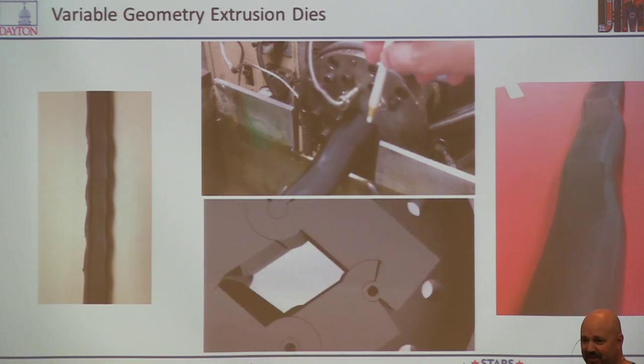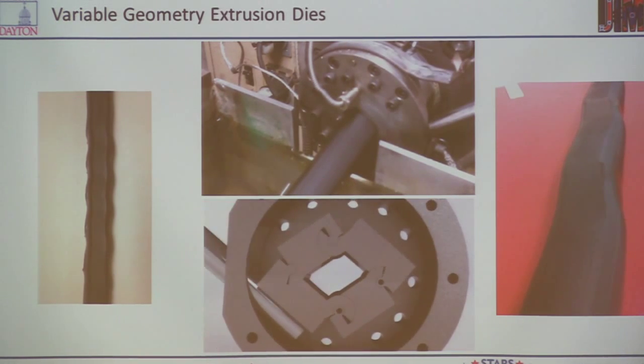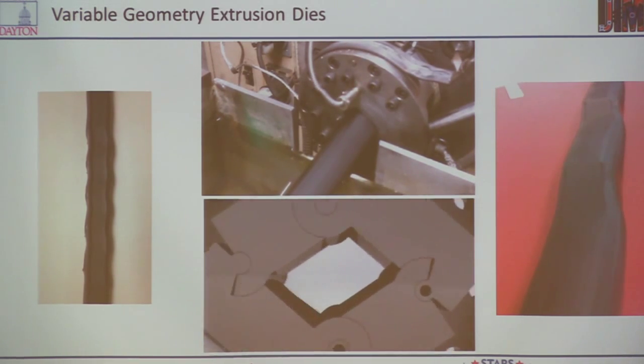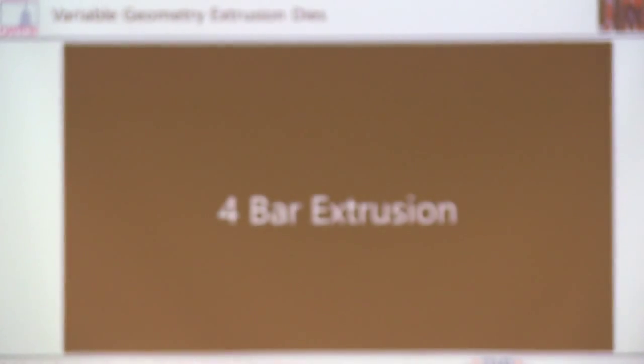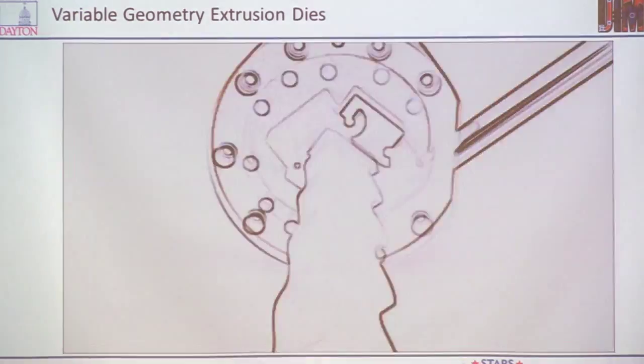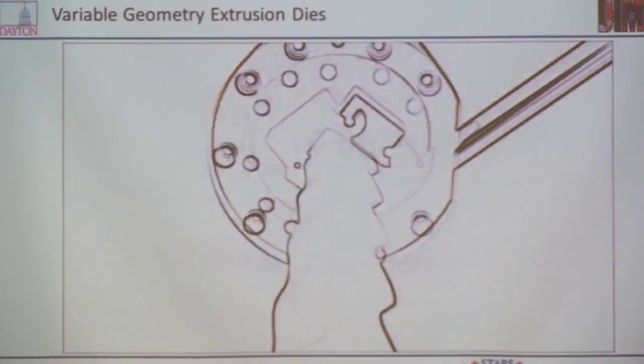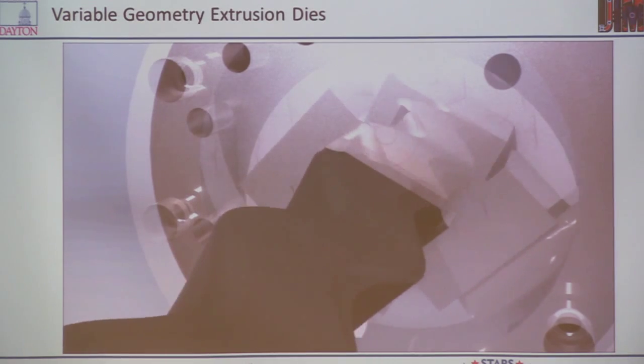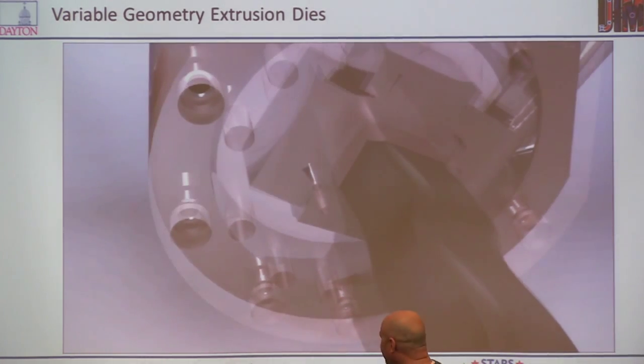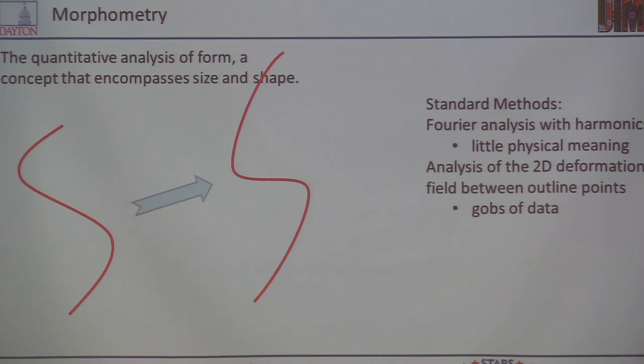And so we got pretty excited about this. The students got pretty excited about it. And what do you do when you get excited about one of your projects? You make a cool video. So we were pretty excited about that one. That was our video to show it off. So that's the variable geometry mechanisms in extrusion.